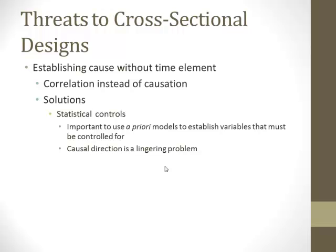Even with statistical controls in place, in most cases we still can't assess the temporal precedence issue. Causal direction is a lingering problem: does X cause Y, or does Y cause X? Is it the chicken or the egg that came first? This is very difficult in a cross-sectional design, if not impossible. A lot of times you just have to rely on theory and observation.